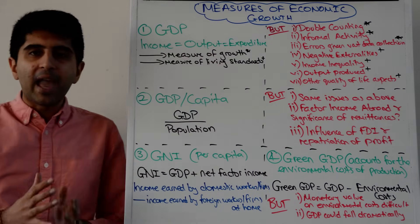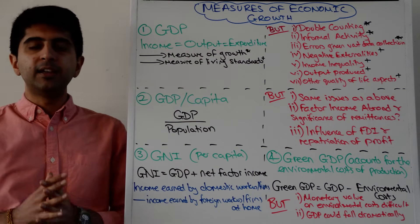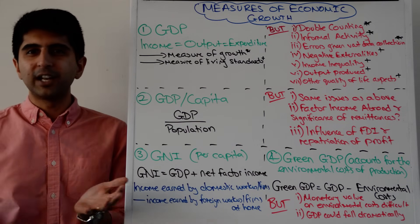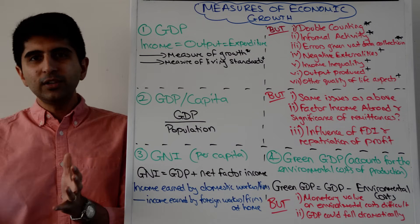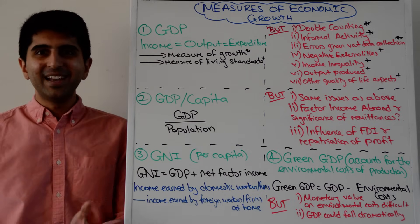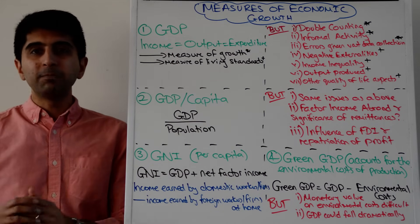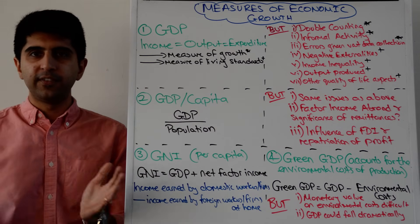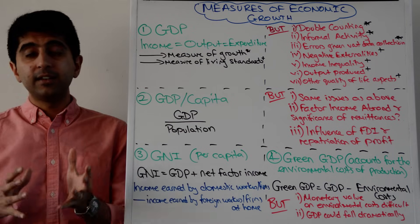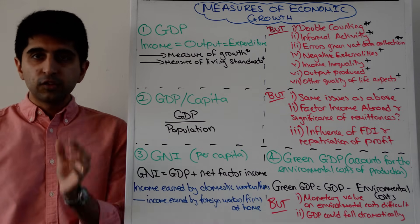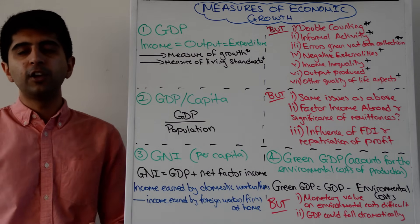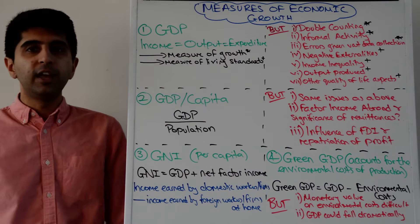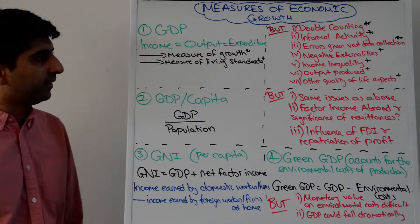Another issue is the scope for errors. Think about it — the final value of all goods and services produced in an economy in a year requires a huge amount of information to get perfect. That data can come from a huge variety of different sources across the economy, and it needs to be collected in a short space of time. So the chance for error is very large, which is why we often see two, three, or sometimes even four revisions to quarterly GDP figures.